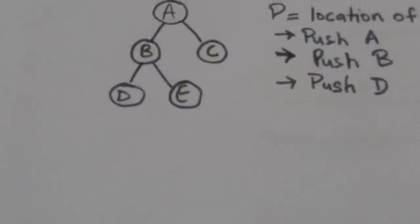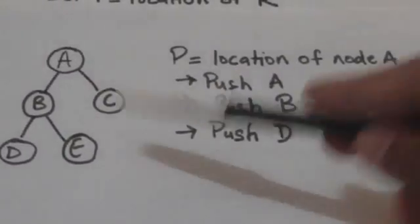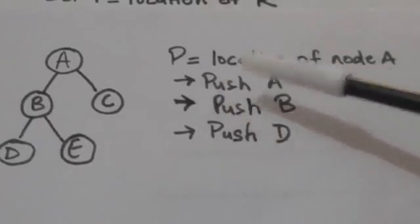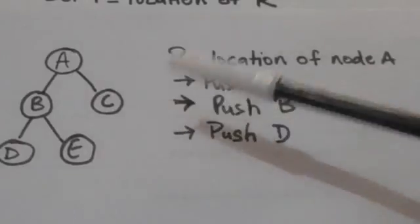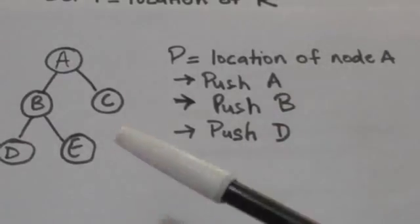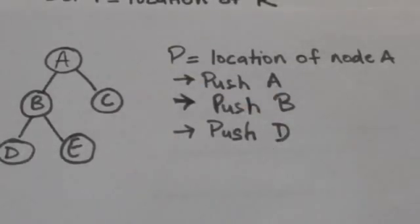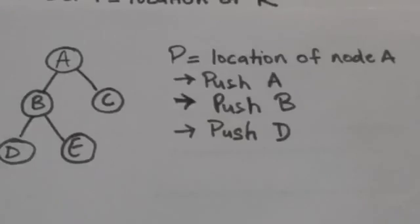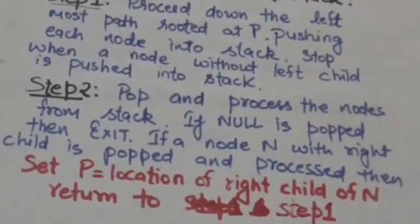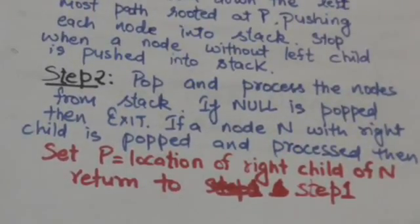Suppose this is binary tree T and variable P contains the location of node A. Then in step 1, we will push node A into the stack. After this we will push the left child of node A, that is node B, into the stack. After this we will push the left child of node B, that is node D, into the stack. Node D doesn't have any left child, so we will stop there.